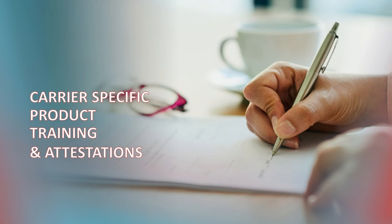The final step in part three is that once you become contracted with each carrier, you're then going to have to do carrier-specific product training and attestations. The contracting process will have you supply a W-9, demographic information like your name, address, and social security number to set up profiles. Once that's approved, you have to do carrier-specific training for each product they'll sell during AEP — the Annual Enrollment Period — when new plans and products come out for the following year.